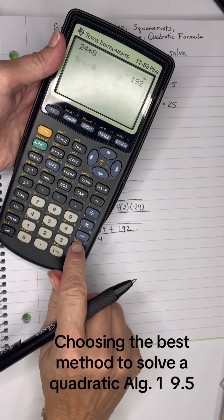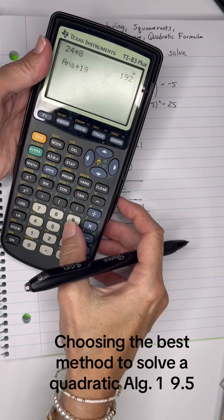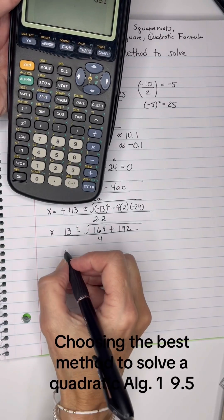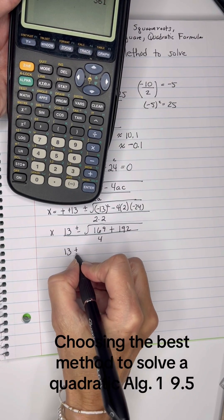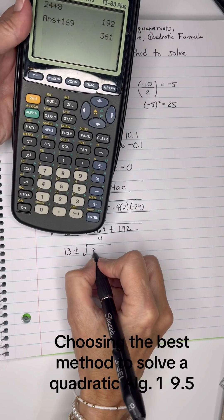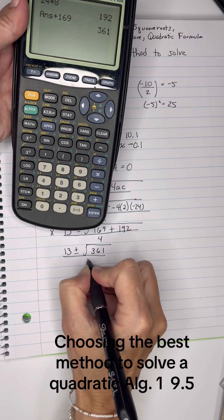Okay, take your 192 and add 169 to it. And then we have 13 plus or minus the square root of 361 divided by 4.